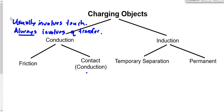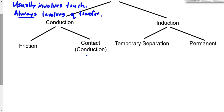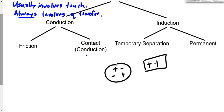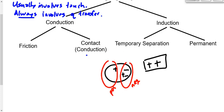Induction involves two categories: temporary separation of charge and permanent charge. If you bring a positive object near a neutral object, the positives inside the neutral object are pulled toward it. The side closest to the positive becomes negative, and the side furthest away becomes positive. Because the closest side is oppositely charged, the neutral object is attracted to the positive object — but this is temporary, because if you take the positive away it goes back to the way it was.